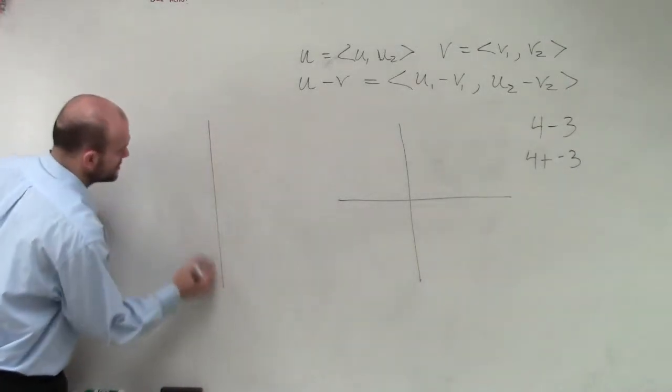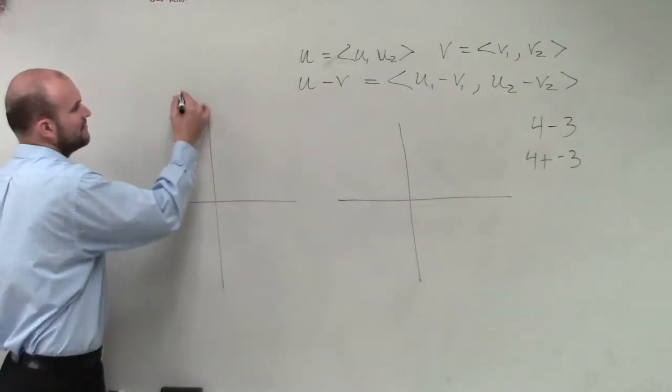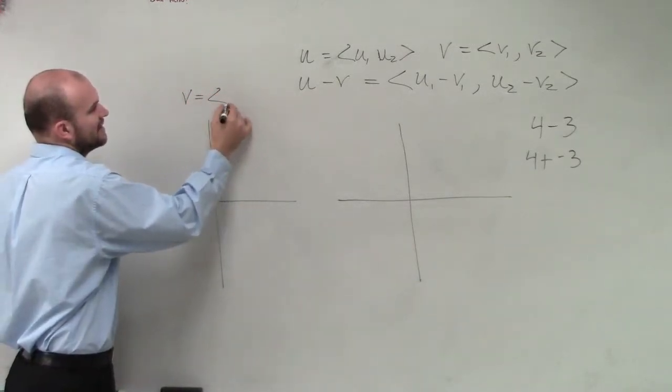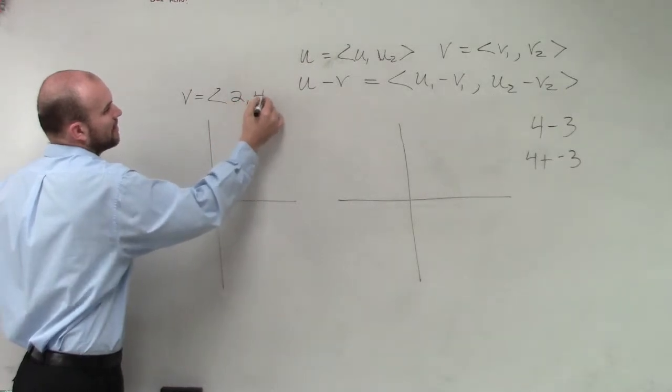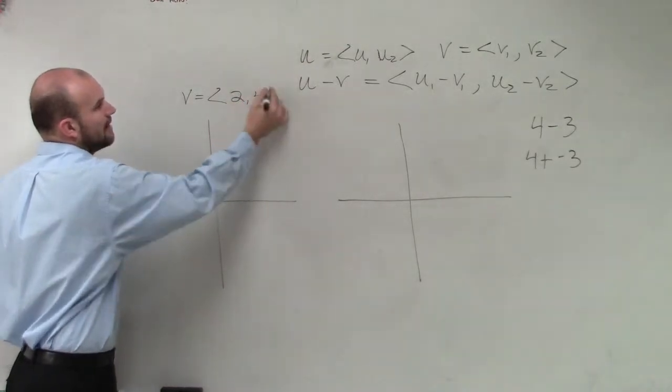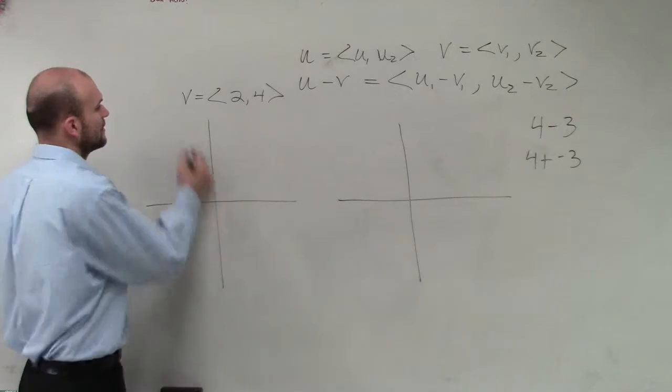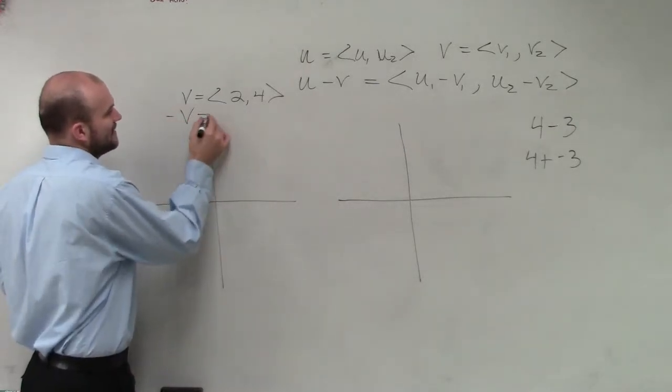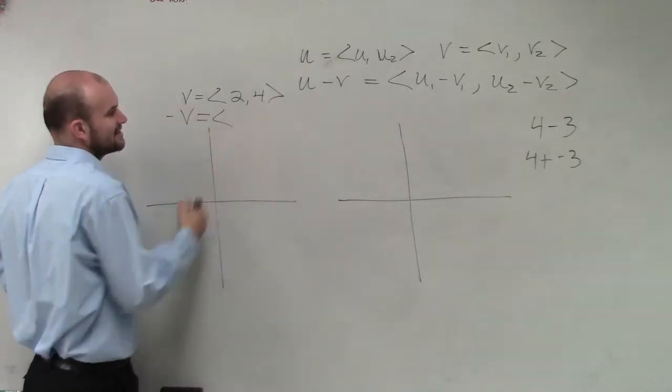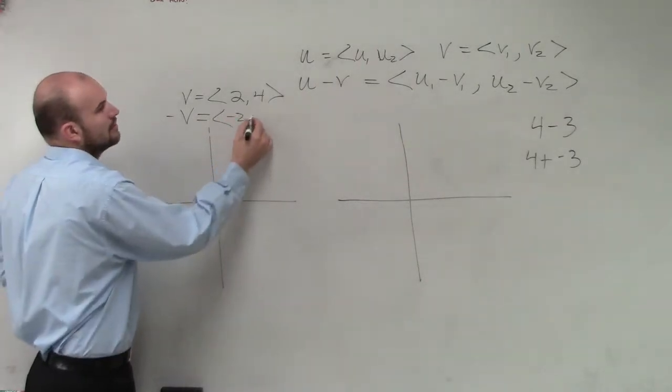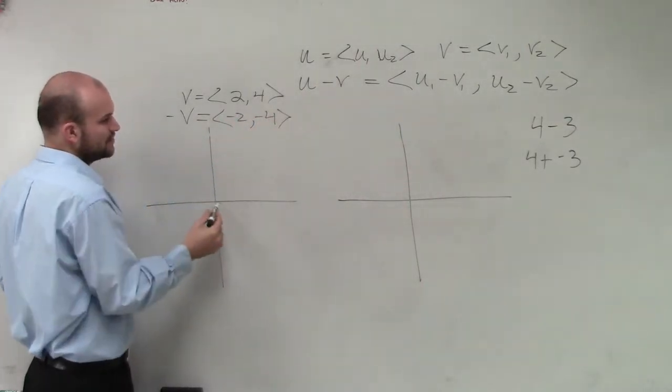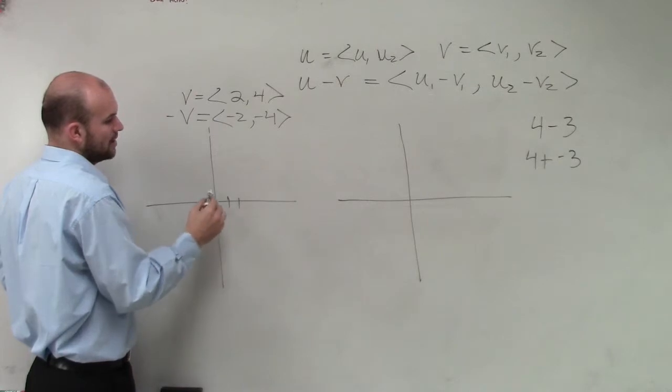So, let's just go through something real quick. If I have a vector v, and let's say my vector v is at 2 comma 4. Now, we talked about scalars, right? What if I had negative v? What do you think that's going to now produce? Negative 4, right? So, let's go over 2, 4. 1, 1, 2, up 4. 1, 2, 3, 4.